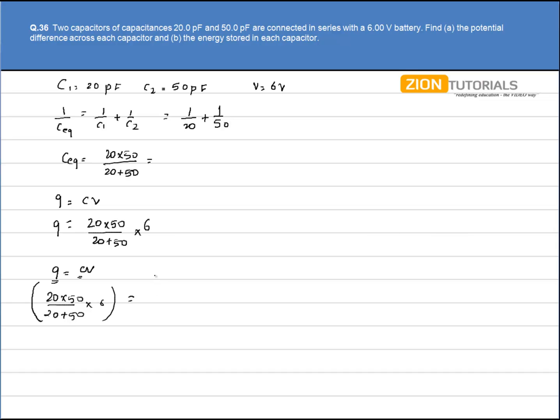To calculate the potential drop across 20pF, capacitance will be 20 into V. So V comes out to be 1.7V.